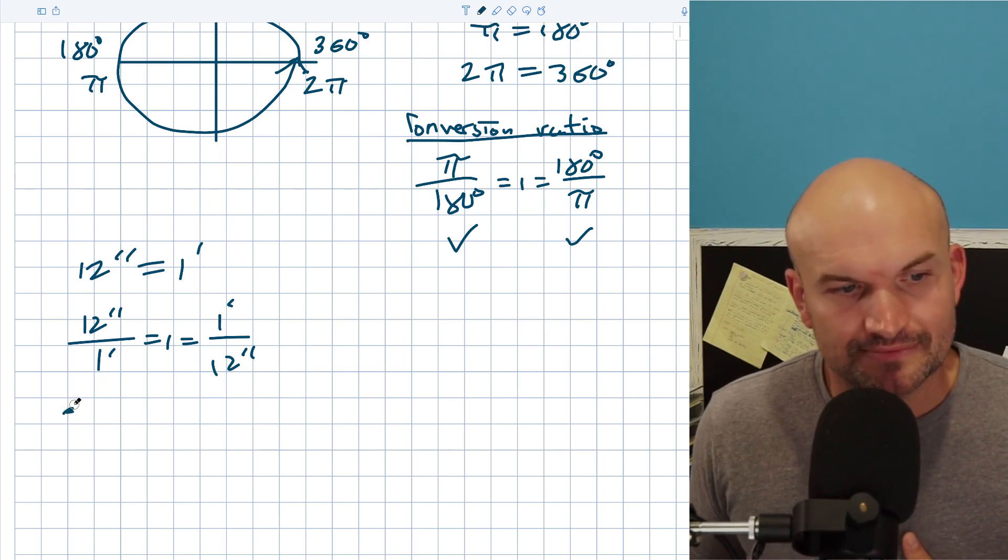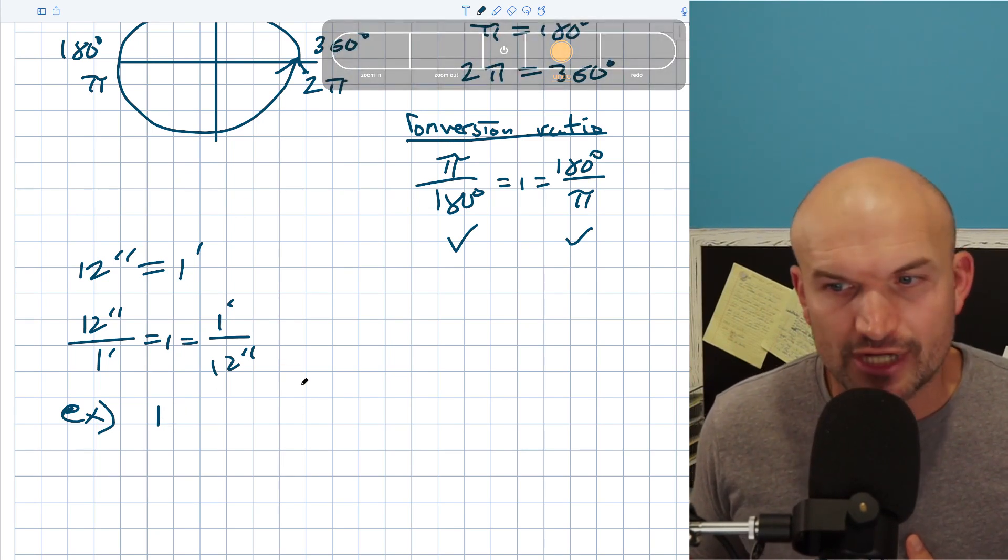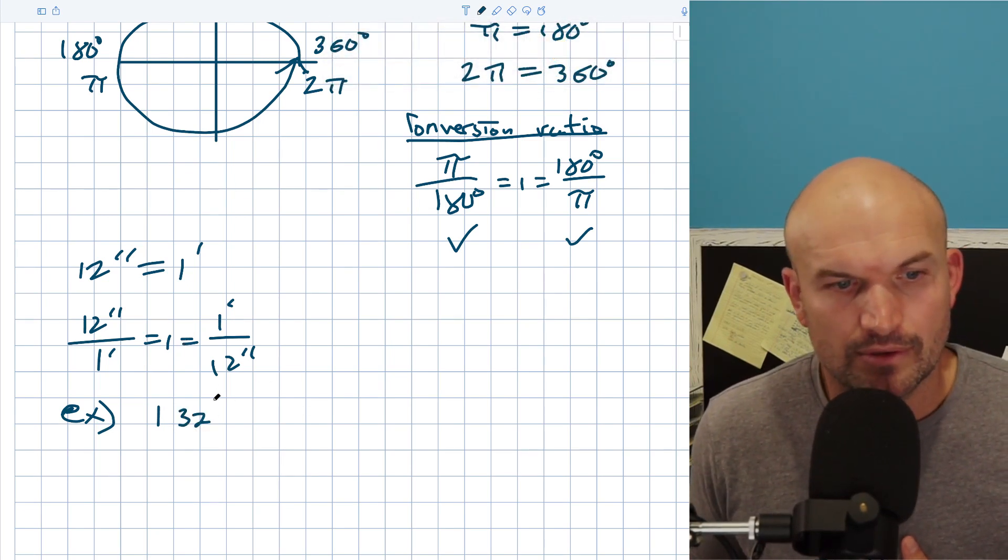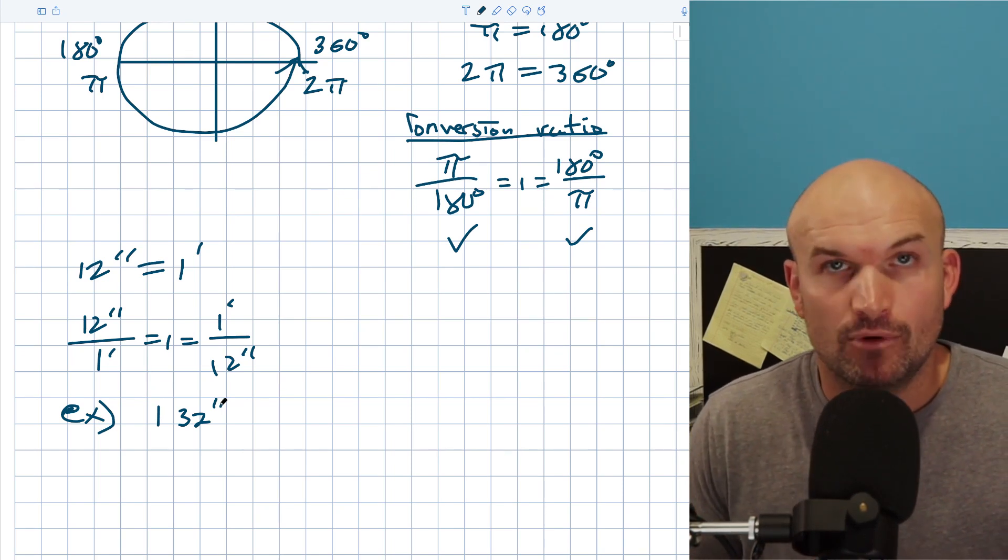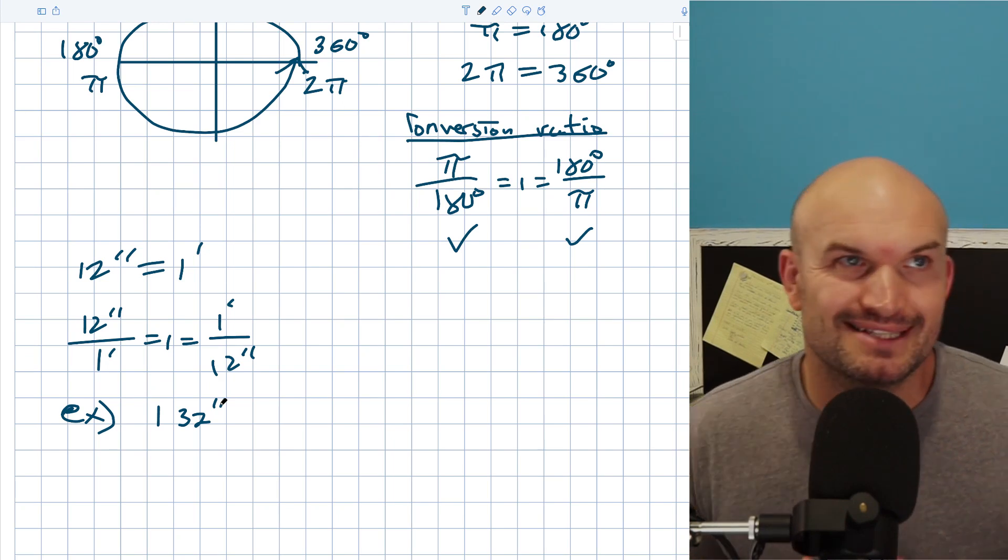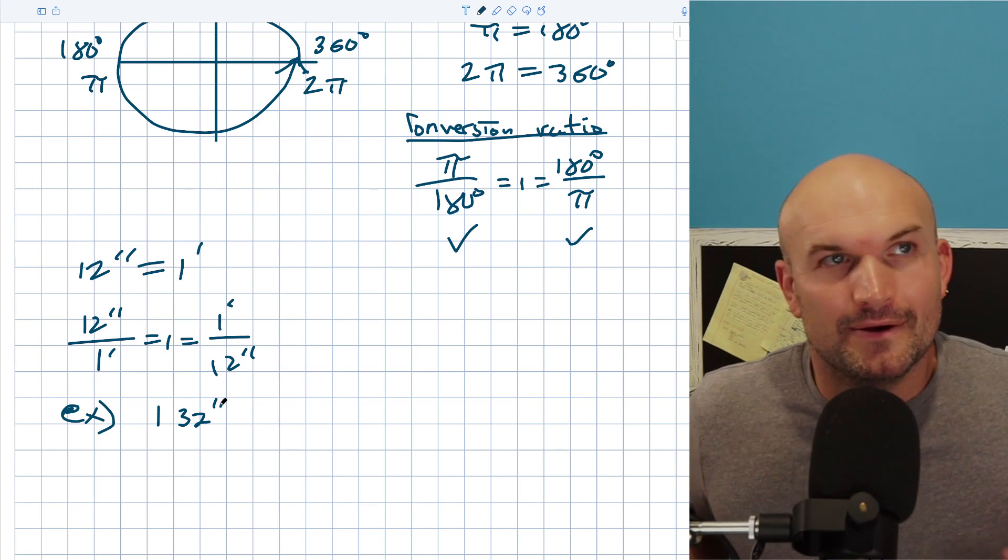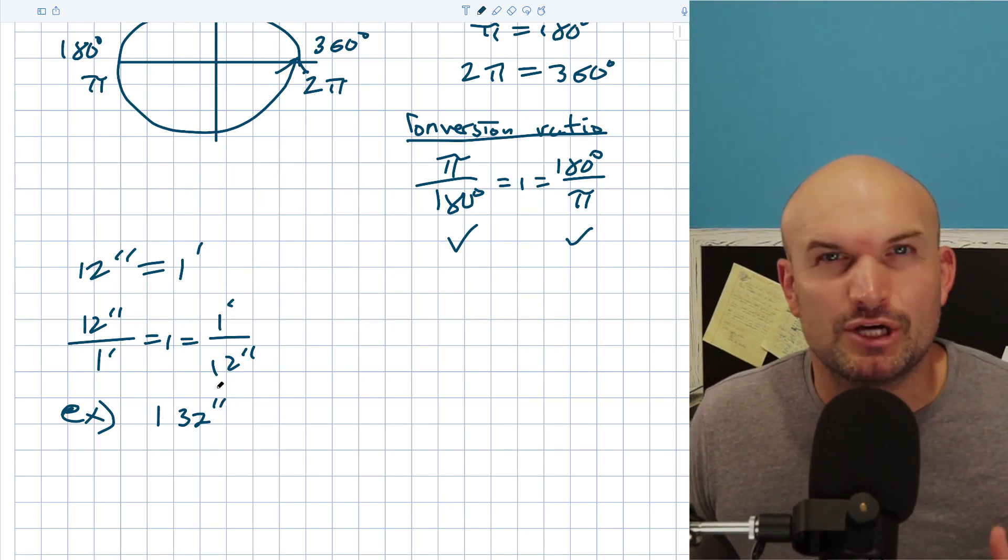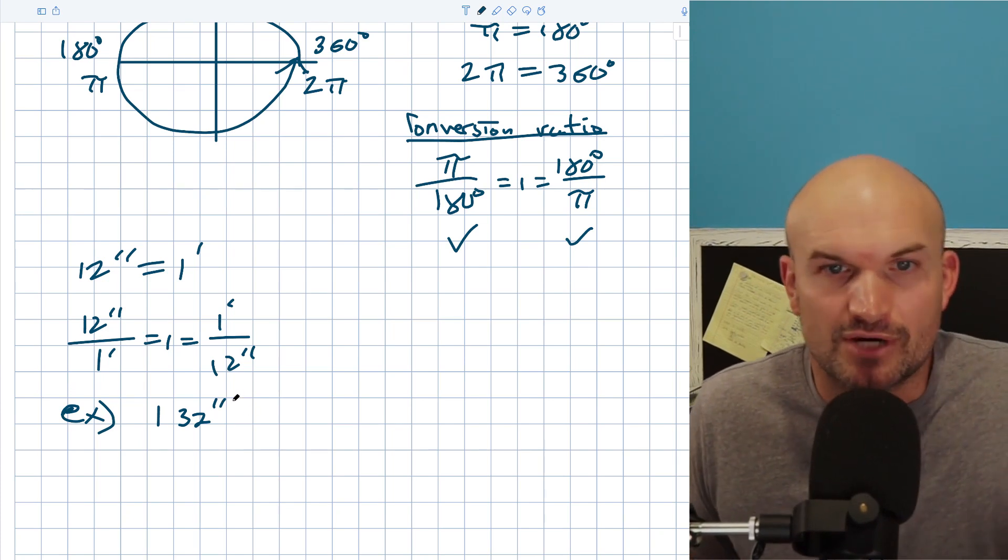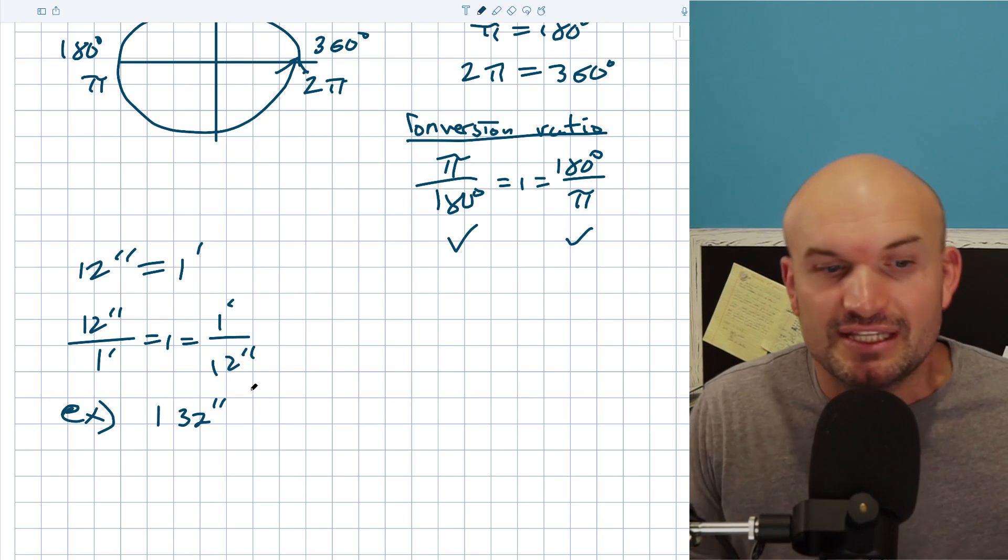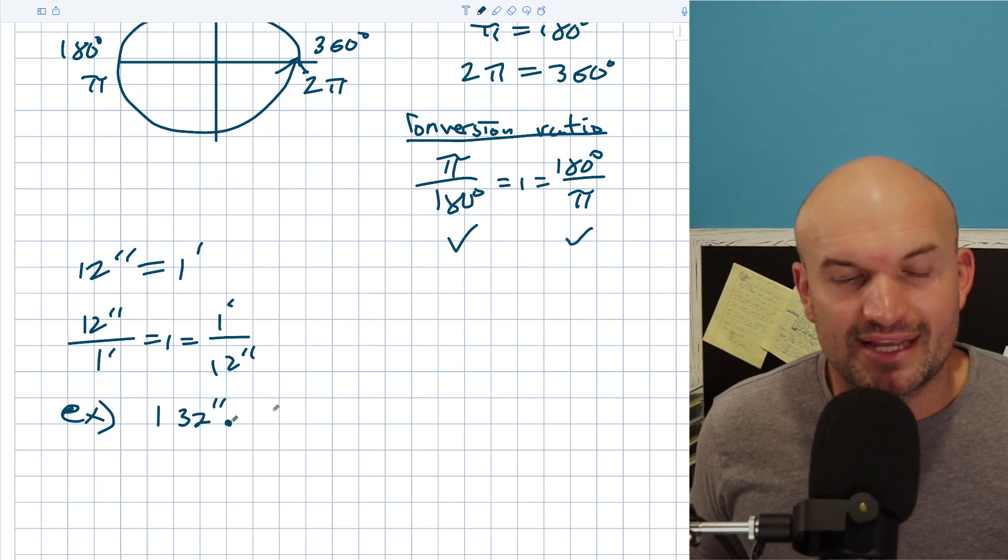So what if I had a measurement and I said something is 132 inches, and I'm like, hey, I need to know how many feet this is. What do you do? Well, most of them say just divide 132 into 12. And you say yes, that's exactly what you do. But why, how could we mathematically also do that? How do we go from inches to feet? Well, again, you say there's 12 inches in one foot. So the number of 12 inches that evenly divided in 132 is going to tell you the number of feet. And yes, that's exactly correct.